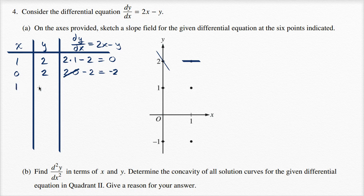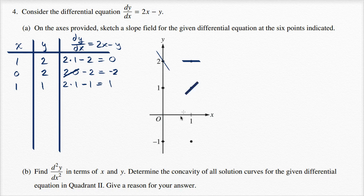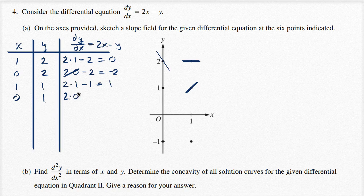x is one, y is one: it's going to be two times one minus one, so two minus one — it's going to have a slope of one, which looks something like that. Then x is zero, y is one: slope is going to be two times zero minus one, which is equal to negative one. Notice it's less negative than up here — it's less steep.